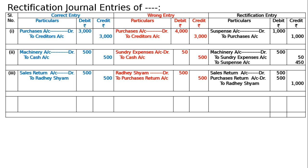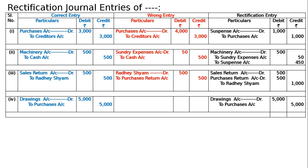The fourth entry: goods taken by the proprietor worth five thousand were not entered in the books at all. The correct entry is drawings account debited to purchases account five thousand. Since no entry was passed, the rectifying entry itself serves as the recording entry — drawings account debited to purchases account five thousand, being goods taken by the proprietor for private use not entered anywhere.